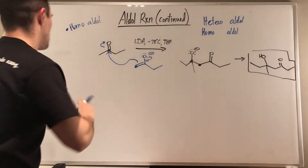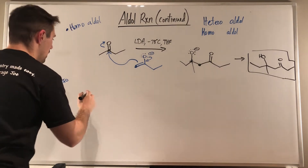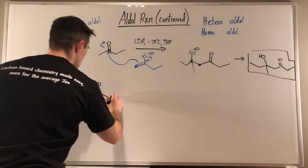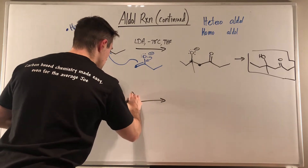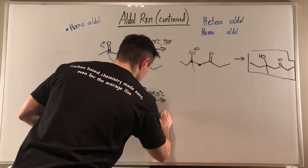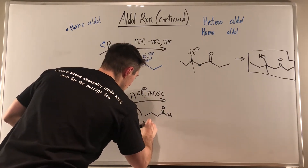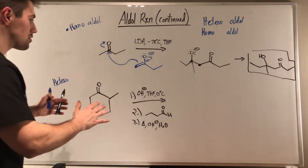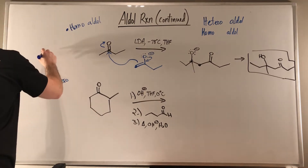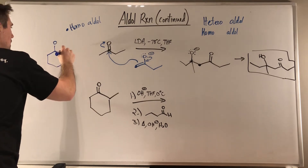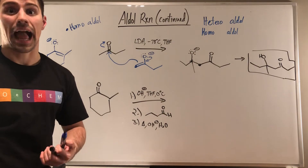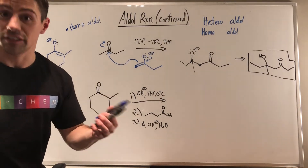Now let's look at a much more obvious heteroaldol situation. If you get something along the lines of: a first step of hydroxide, THF, zero degrees Celsius — those are conditions for a thermodynamic enolate, so my enolate forms on the more substituted side. Then a second step gives you a carbonyl — something to attack. And a third step might even give you heat, base, and water for the condensation.